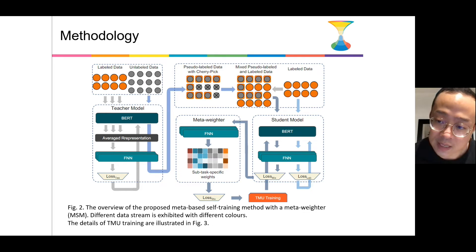And this student model is our final model. It should be noticed that we have a re-weighting process when we train the student model. It's named TMU training. TMU training is used for re-weighting each instance in mixed pseudo-labeled and golden-labeled data. This training is a three-step process for allocating task-specific weights for each input.